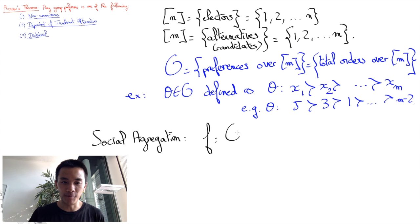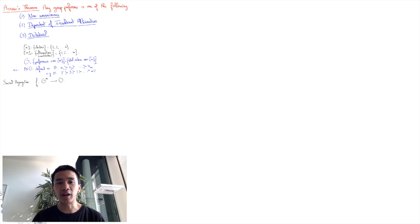Then, a social aggregation of individual preferences is a function f that goes from O to the power N to O, which aims at summing up the possibly diverging individual preferences into a group preference. Such a social aggregation is said